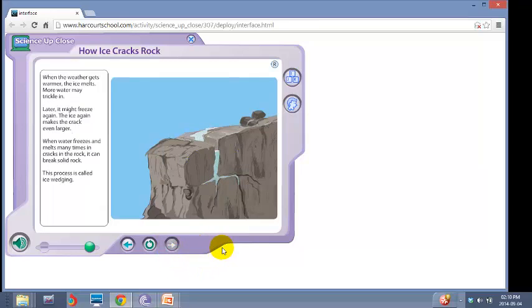When the weather gets warmer, the ice melts. More water may trickle in. Later, it might freeze again. The ice makes the crack even larger. When water freezes and melts many times in cracks in the rock, it can break solid rock. This process is called ice wedging.